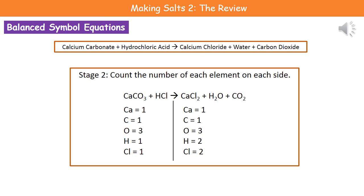The good news is that if we've managed to write down the symbols in our equation correctly, that gets us one out of our two marks. There's a sneaky little trick for whether we need to do any balancing: if the equation that asks you to write a balanced symbol equation is worth one mark, then whenever you've written the symbols it's already balanced. If it's worth two marks, you've got to put some numbers in to balance it.